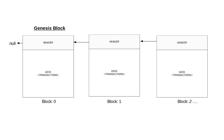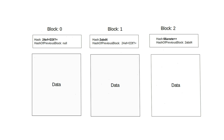How are these blocks linked together? They're linked by hashes. In the header section, we have the hash and the hash of the previous block. If we take a look at block two, we see its hash is 66-whatever, and the hash of the previous block is 2abd4. Looking at block one, we see that the hash of that block is 2abd4. We can then see how these blocks are linked by using hash of previous block and the hash. Block one's previous hash is 24ef, and block zero's hash is also 24ef. This is at the heart of blockchain linking and we'll see later the importance when trying to verify the validity of a blockchain.